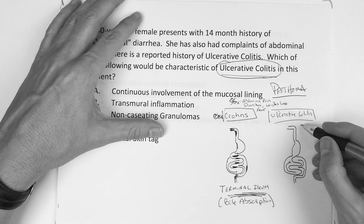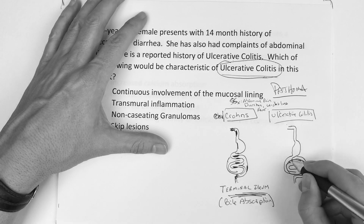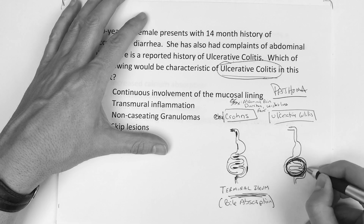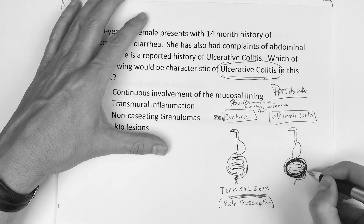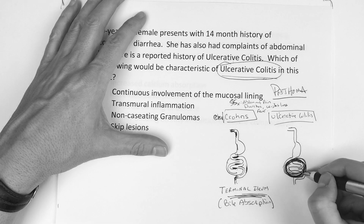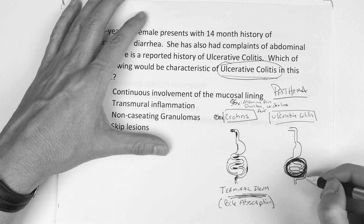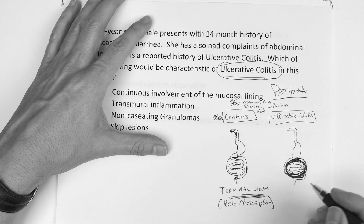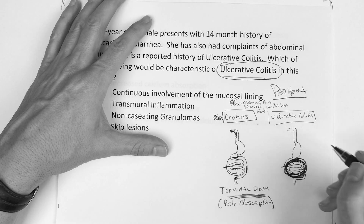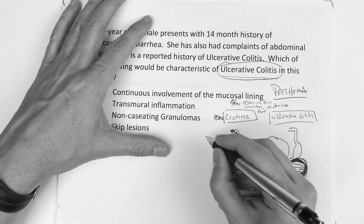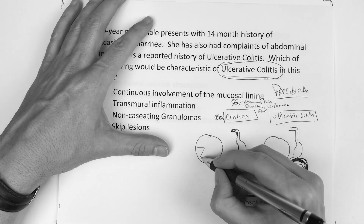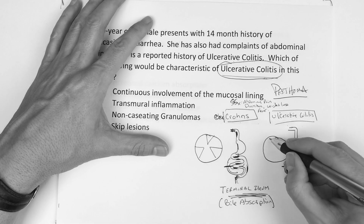When it comes to ulcerative colitis, we should be thinking the bowel — it's mainly the lower end, the bowel. If we were to take a cross-section of the bowel, this is where you'd really drive home whether you understand these two conditions.